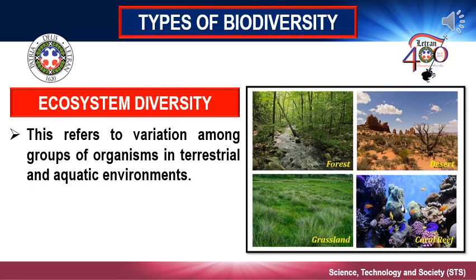First, let's talk about Ecosystem Diversity. Ecosystem Diversity deals with the variations in ecosystems within a geographical location and its overall impact on human existence and the environment. Ecological diversity is a type of biodiversity — it is the variation in ecosystems found in a region or over the whole planet. Ecological diversity includes the variation in both terrestrial and aquatic ecosystems, and can also take into account the variation in the complexity of a biological community, including the number of different niches, the number of trophic levels, and other ecological processes.